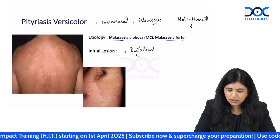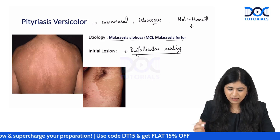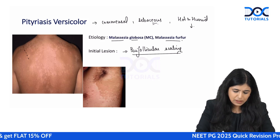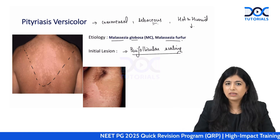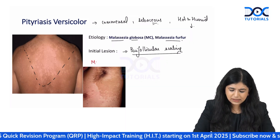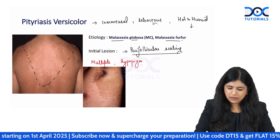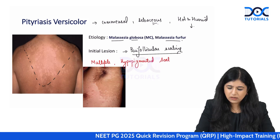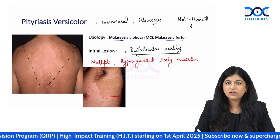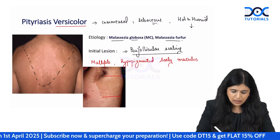The initial lesion begins as a follicular scale because this fungus lives around the hair. The lesions then increase to show typical clinical features: multiple hypopigmented scaly macules on the upper back and upper chest. This is the classic exam description. Sometimes lesions can also be hyperpigmented — hence the name 'versicolor' — so both hypo- and hyperpigmented lesions can be seen.